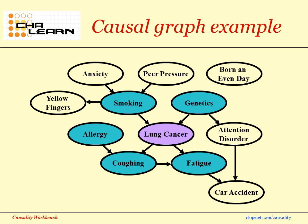This slide shows an example of a causal graph — a virtual example, not intended to represent actual variable dependencies in real cases. Each node represents a variable, and hypothetically, lung cancer may be caused by various factors including smoking and genetics. Smoking may be caused by peer pressure or anxiety. Lung cancer itself may cause coughing or fatigue. To prescribe a treatment, it's important to distinguish between causes and effects. While coughing and fatigue correlate with lung cancer, preventing them by prescribing cough medicine or rest would not prevent lung cancer. Notice that attention disorder will be correlated to lung cancer because it shares a common cause — genetics. Such factors are called confounding factors or confounders.